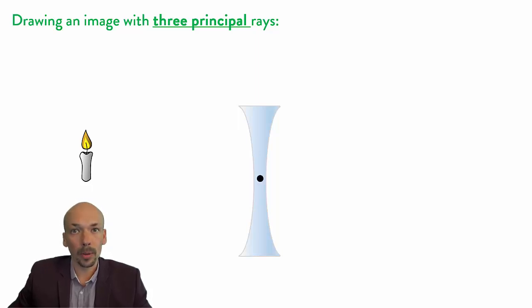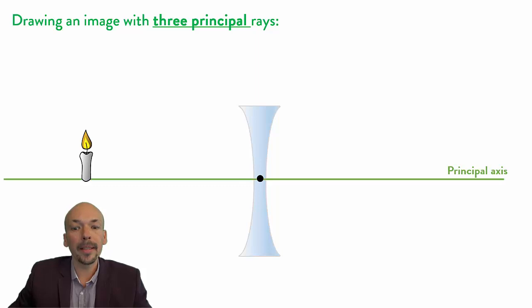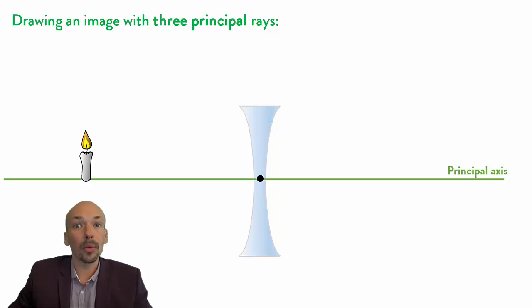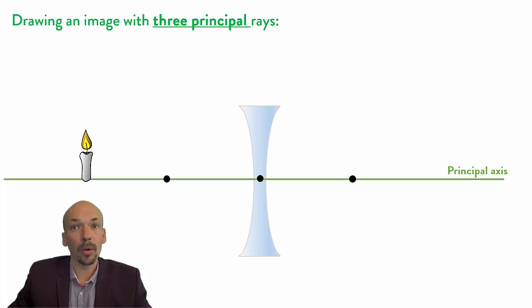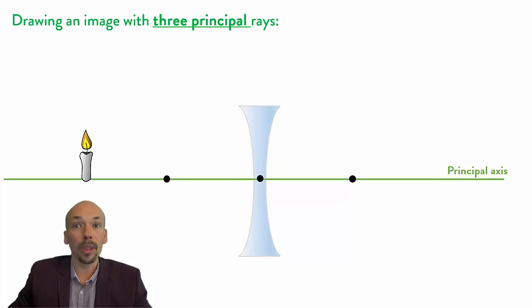We need the optical center and the principal axis going through the optical center. And we need the two focus points, one to the right and one to the left, both with the same focal length. And now we can draw the three principal rays.